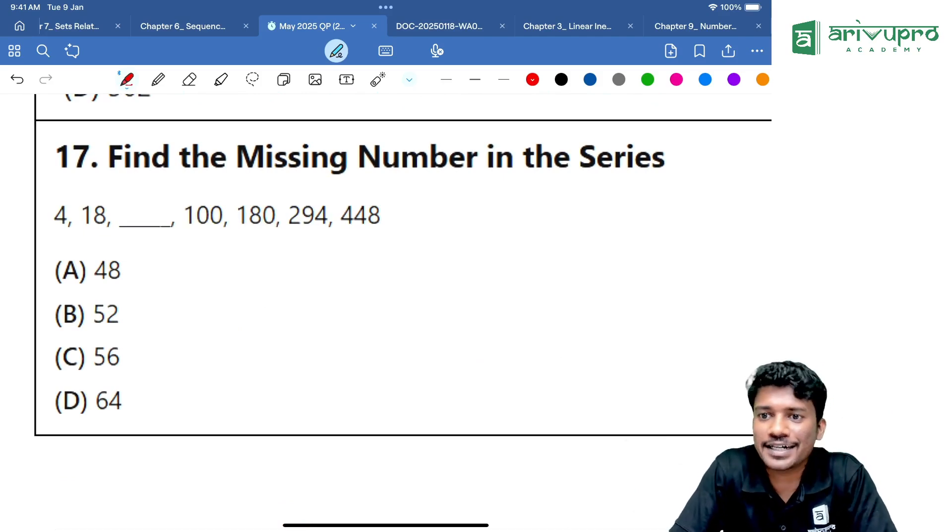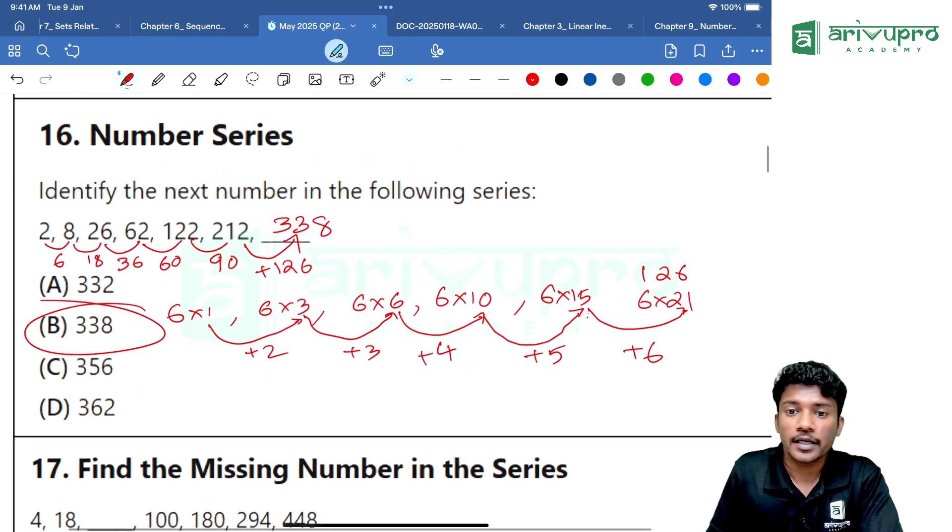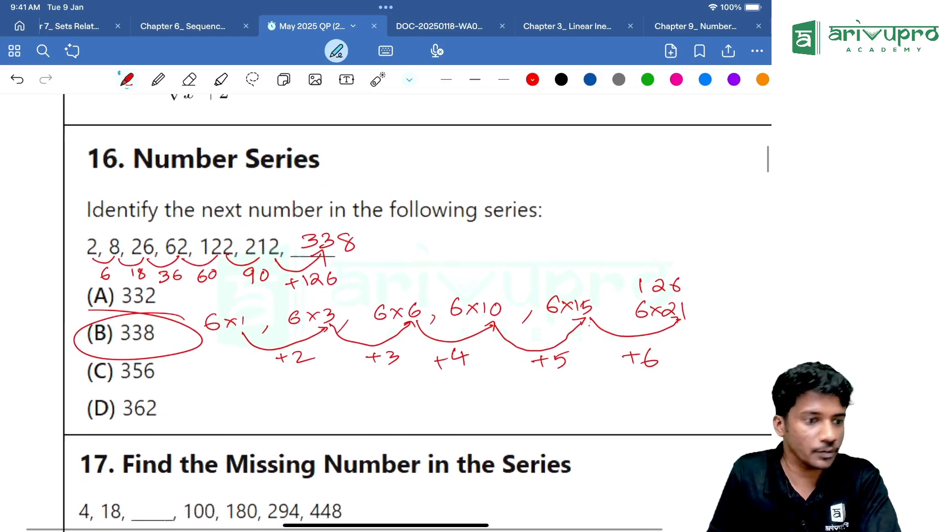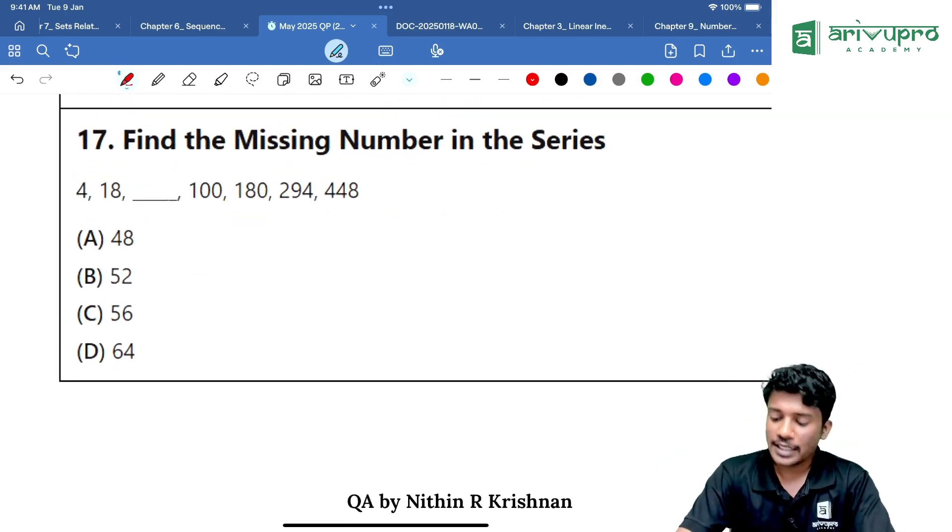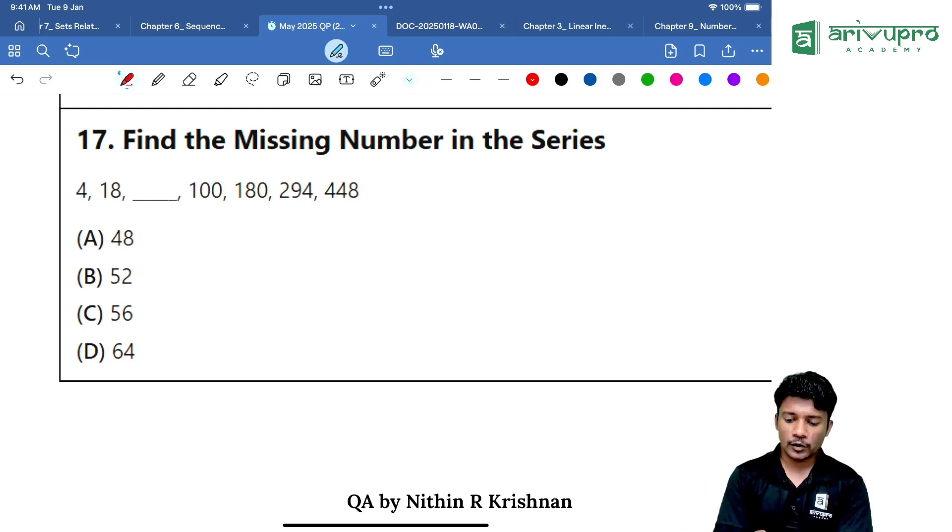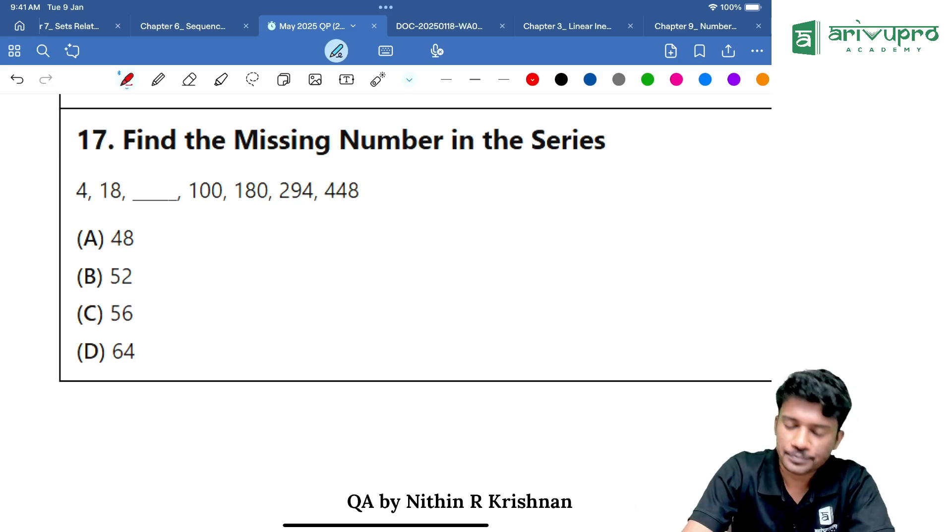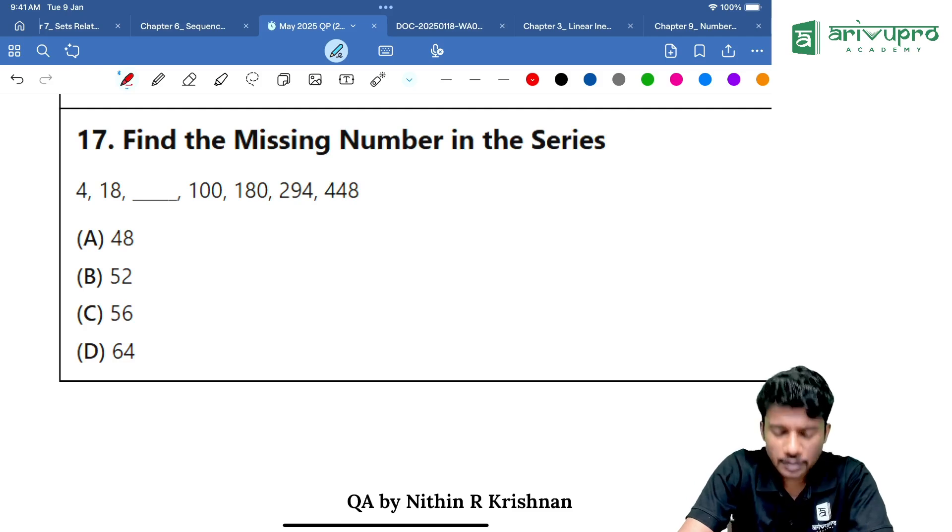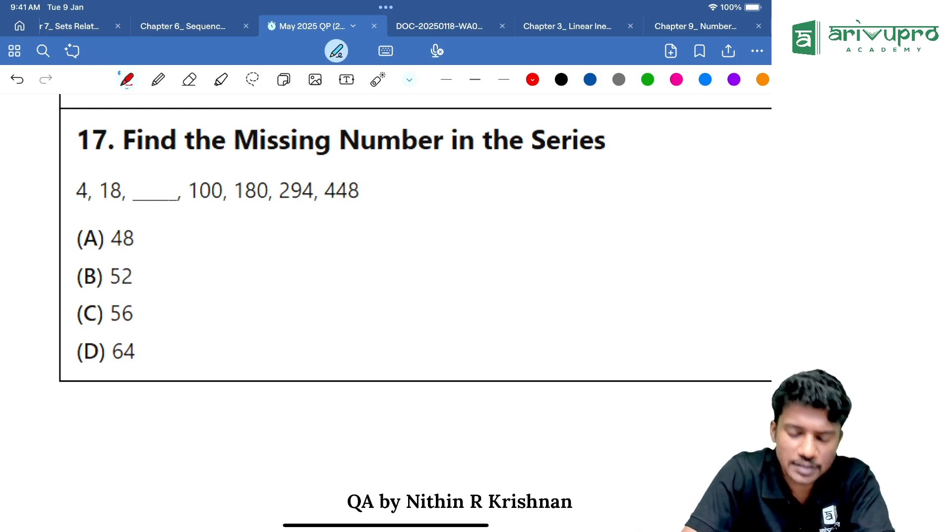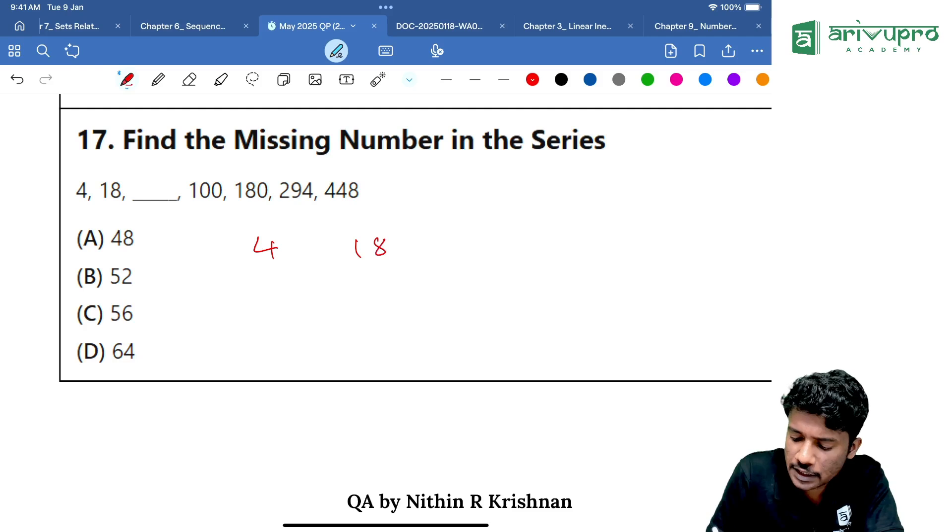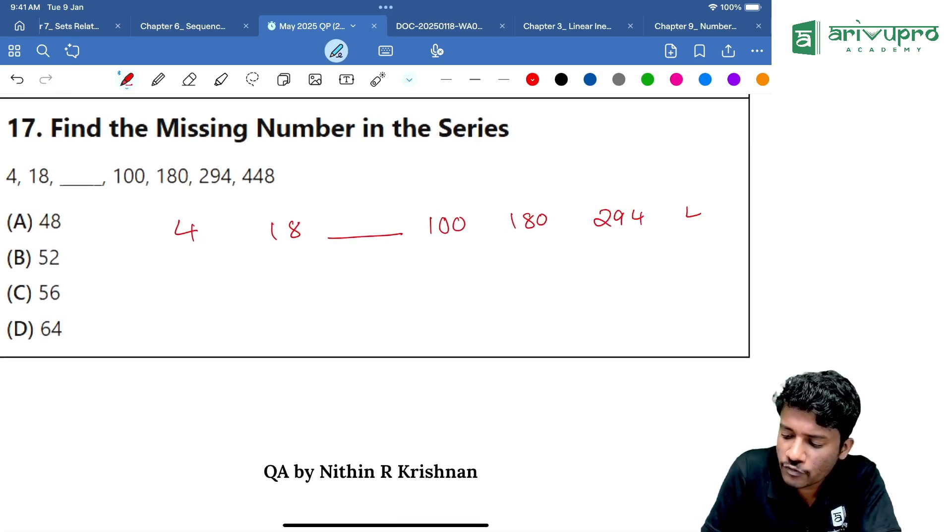Find the missing numbers in the series. 4 is becoming 18, 18 is becoming something else. That something else is becoming 100. 100 is becoming 180, then 180 is becoming 294. Then a pattern, some kind of pattern is forming. If you look here, 4, 18, then dash, then 100, then 180. Then what is happening? 294, then 448.